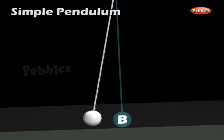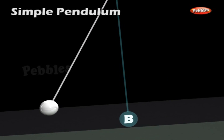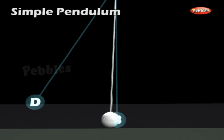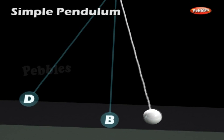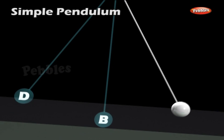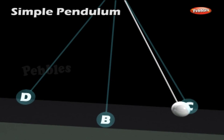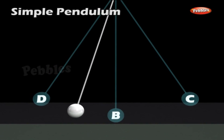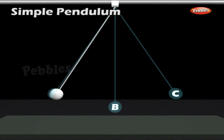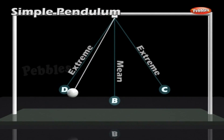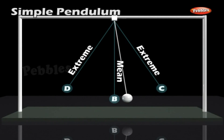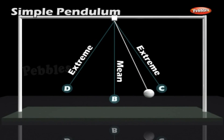Motion of the bob from mean position B to one extreme position D, to the other extreme position C, and back to mean position B is called a vibration. The time taken by the pendulum to complete one vibration is called the time period, usually denoted by T.